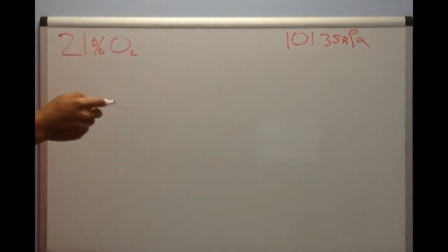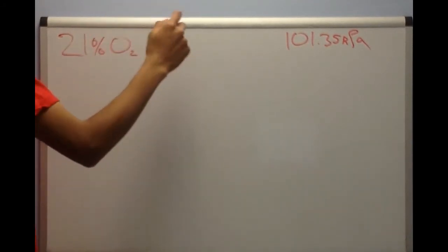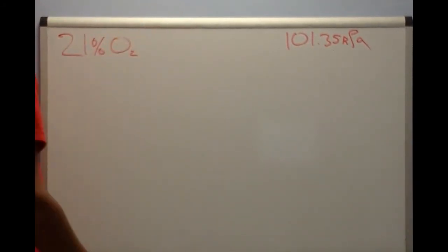To do this we first must find how much partial pressure of oxygen there is at surface level, which we do by multiplying the percent of oxygen in the air by the total pressure at surface level, which is 101.35.